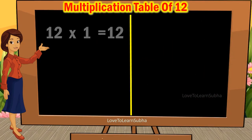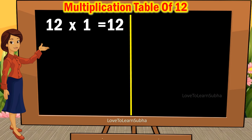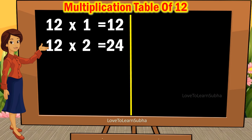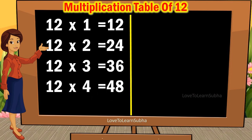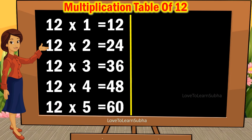12 1s are 12. 12 2s are 24. 12 3s are 36. 12 4s are 48. 12 5s are 60.